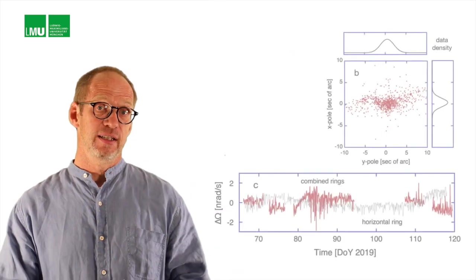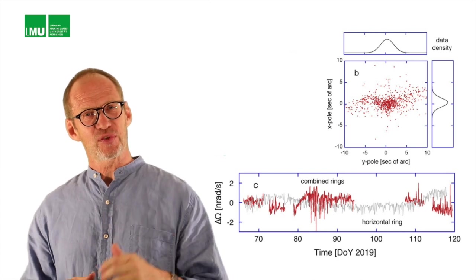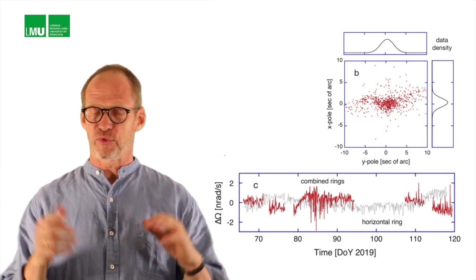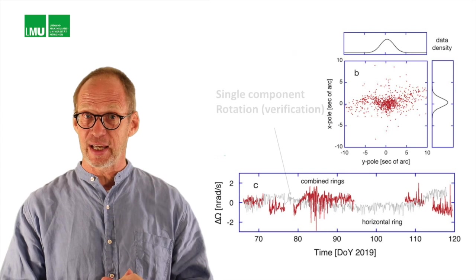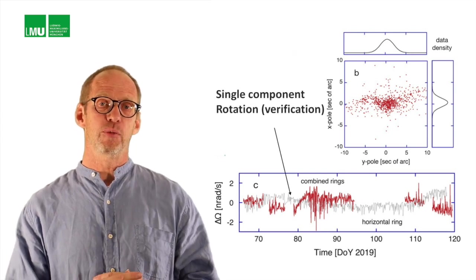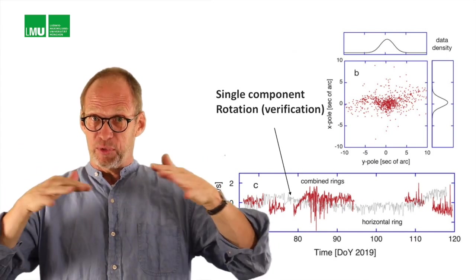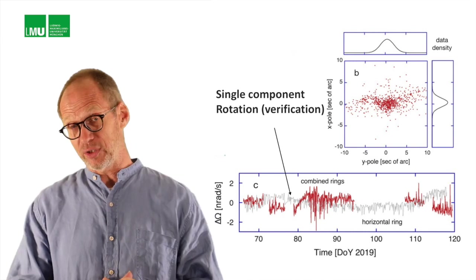So in the PRL paper we actually report the first observations on the stability of this rotational motion detection. What you see in this graph here is a time series over some 40 days, and what you see is basically one component of rotational motion, one observed with the vertical ring laser, which is a horizontal triangle measuring the rotation around a vertical axis.